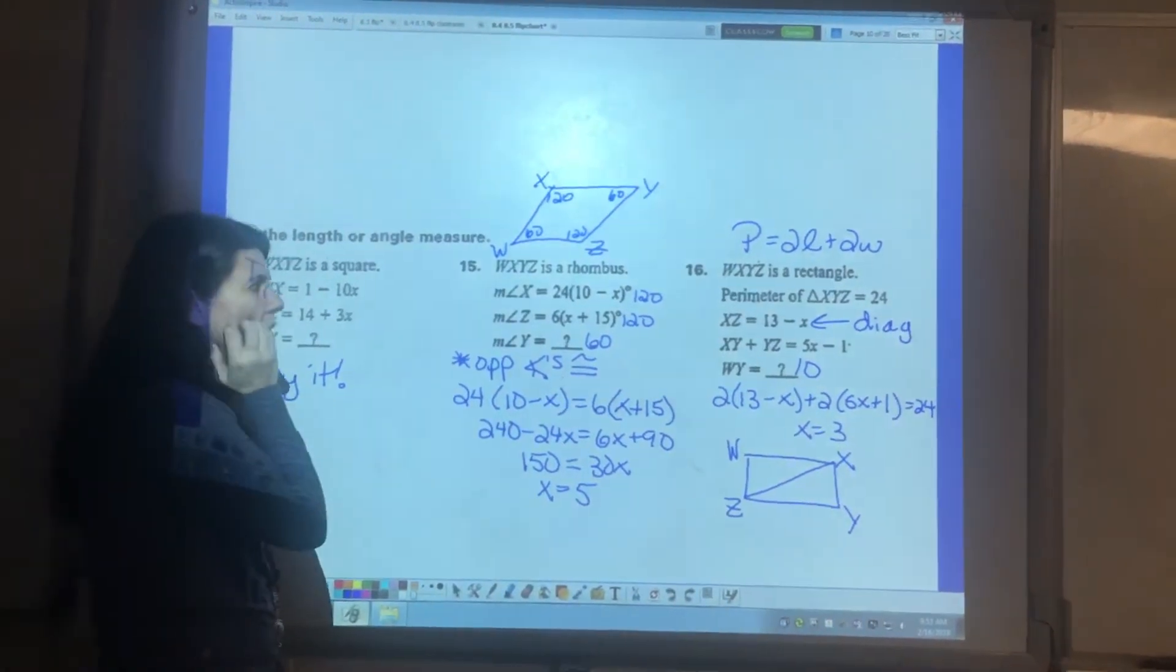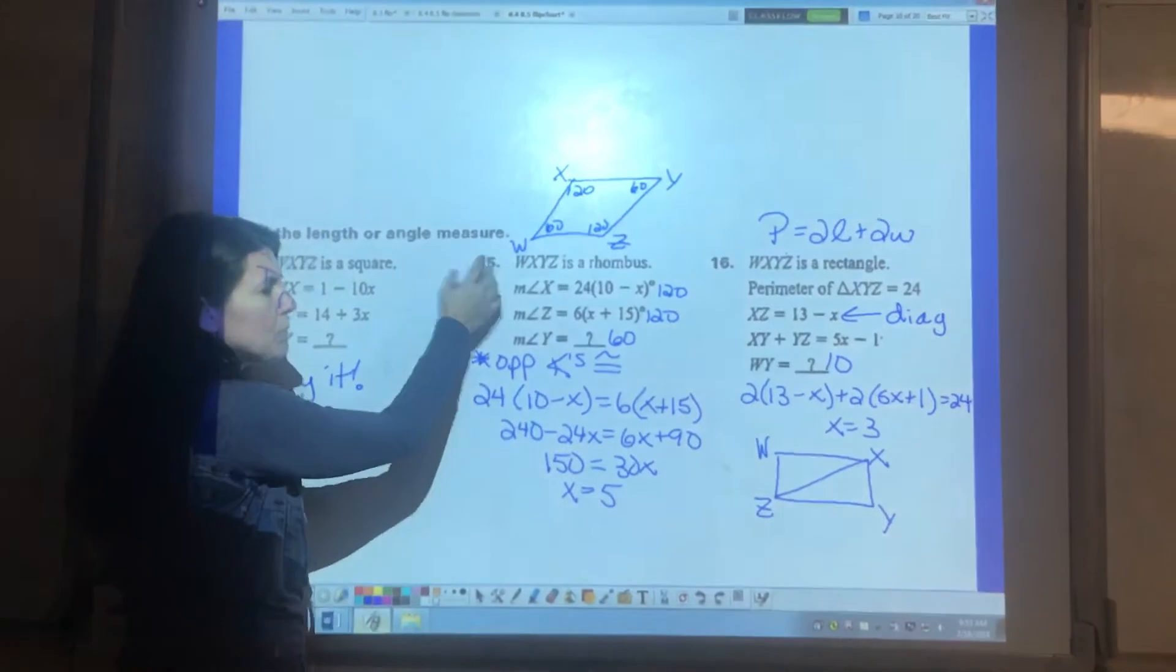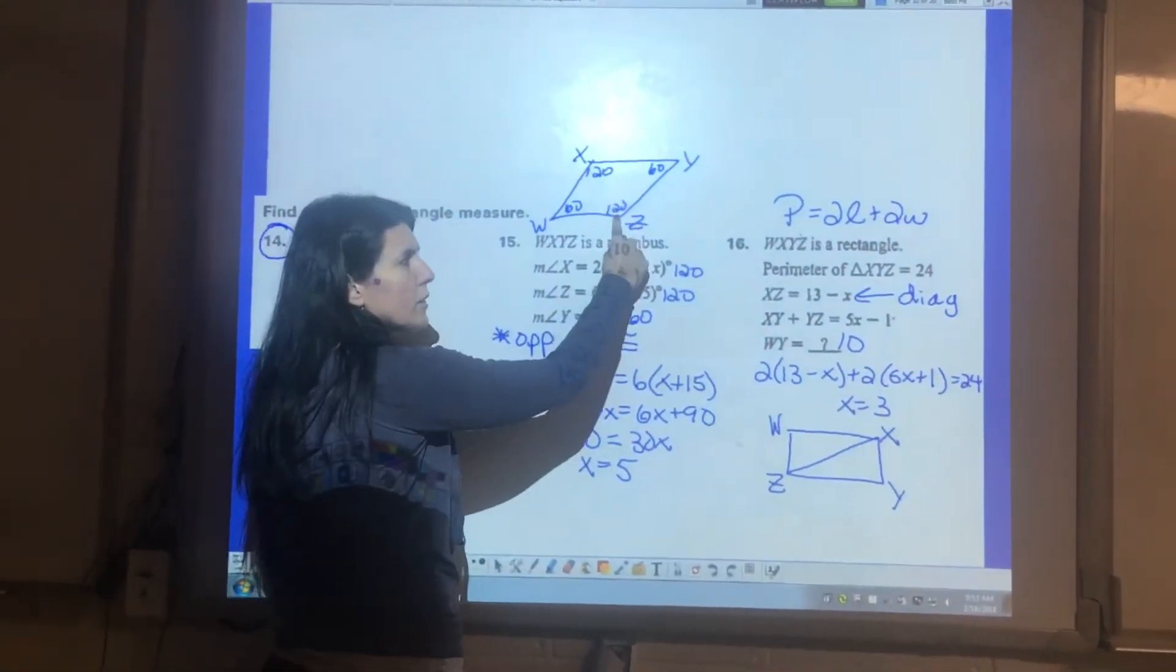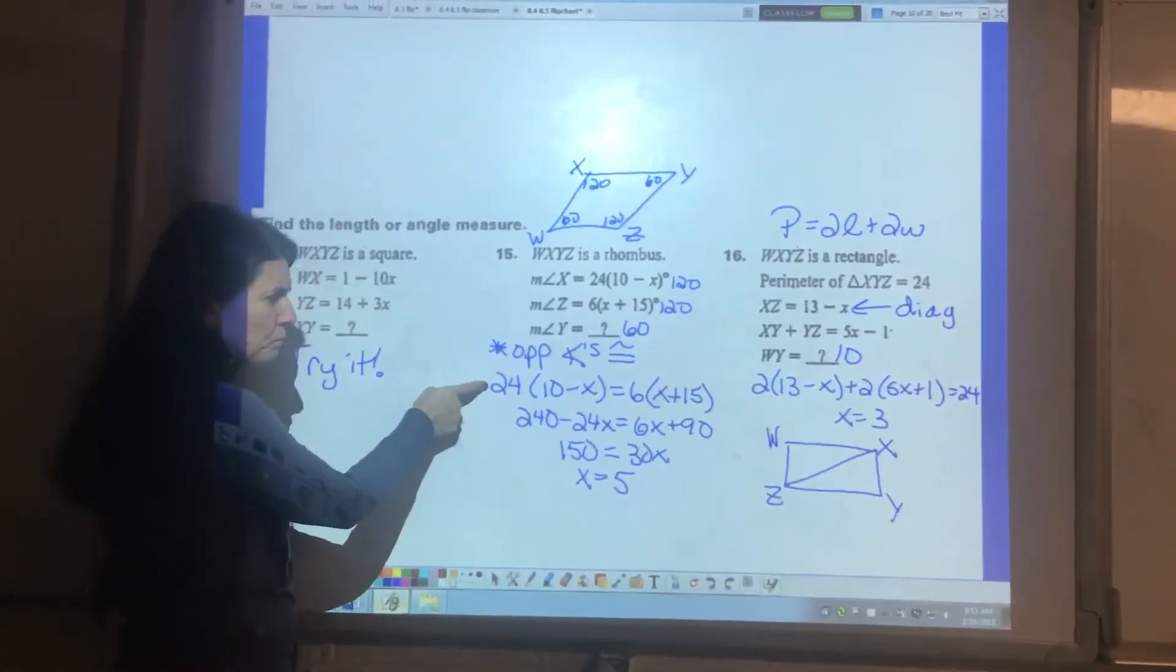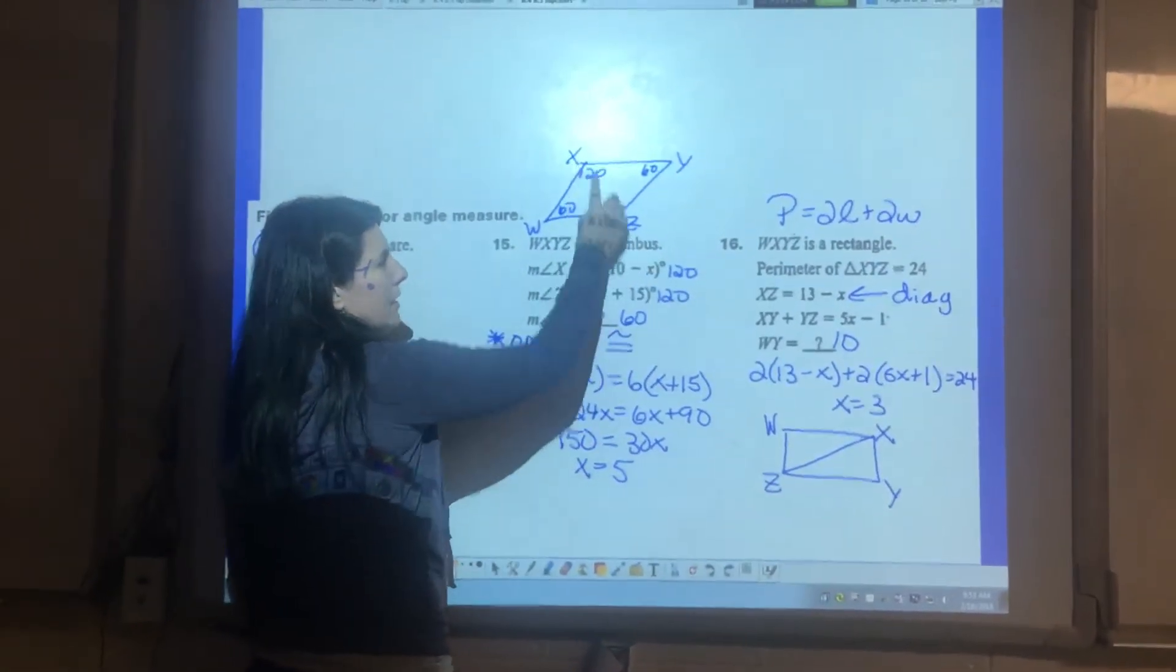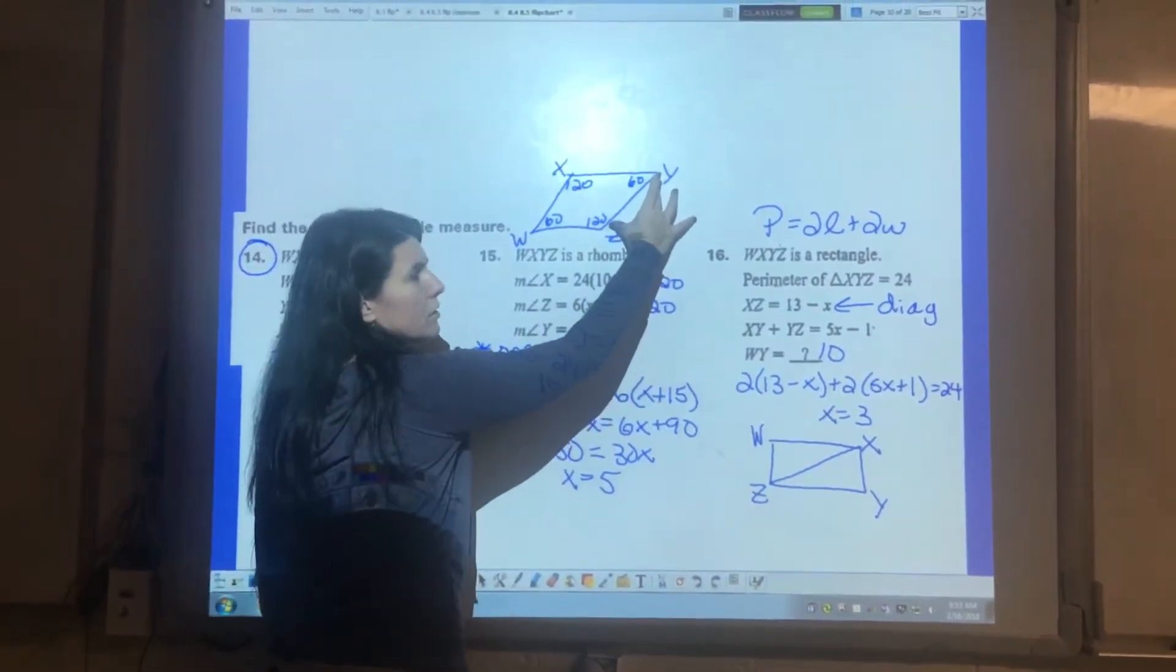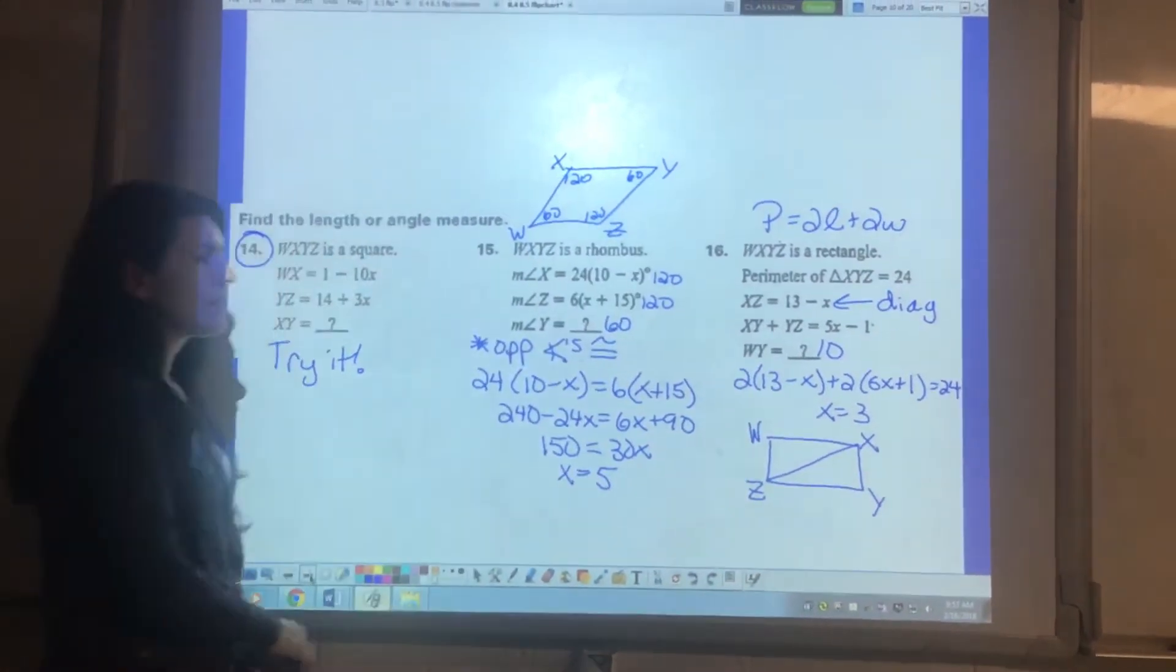Fifteen says WXYZ is a rhombus. I drew a picture because I think that's helpful for you. That also helps you see where X and Z are. They're across from one another which tells me that those two angles are congruent which helps me set up this equation. When I solved my equation I got X equals five. When I plug that back in X and Z end up being 120. We know these angles that are next to each other have to be supplementary. So if this is 120 this angle next to it must be 60.